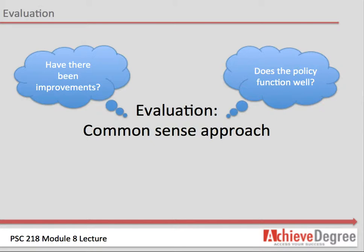For example, to reduce crime, a city might increase the number of police. The number of police has increased and crime has been reduced — it seems like common sense. However, results might be deceiving. Consider the adjacent city, which did not increase the number of police, but also experienced the same levels of reduction of crime. Perhaps there is another cause for the reduction of crime, like lower unemployment.